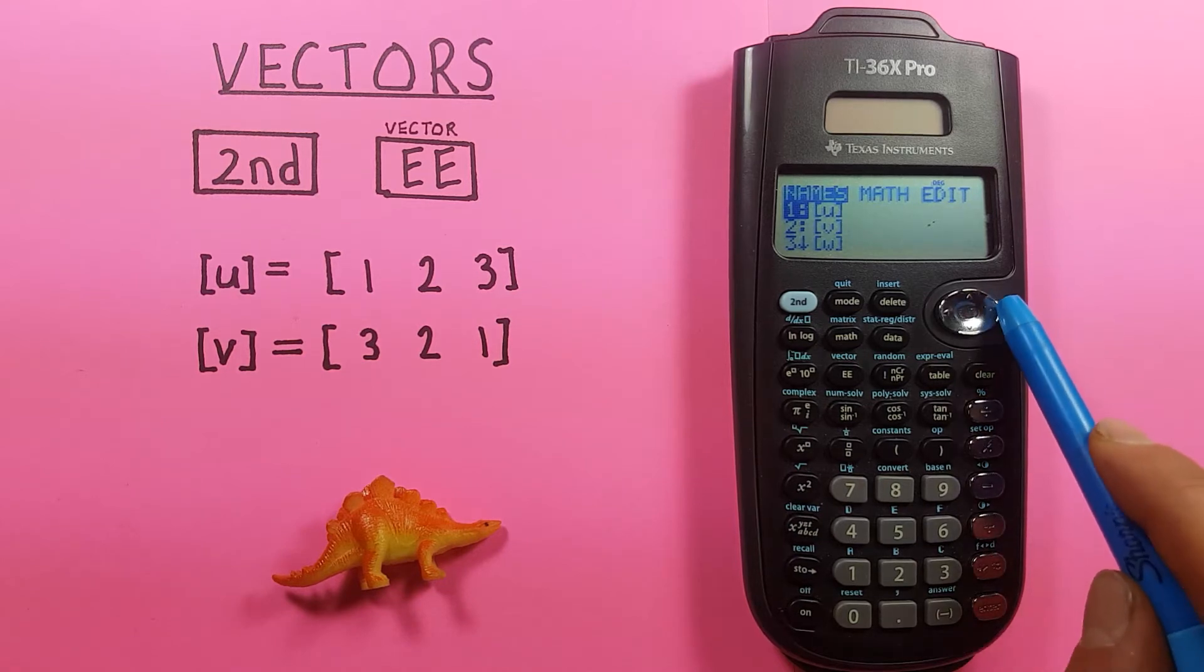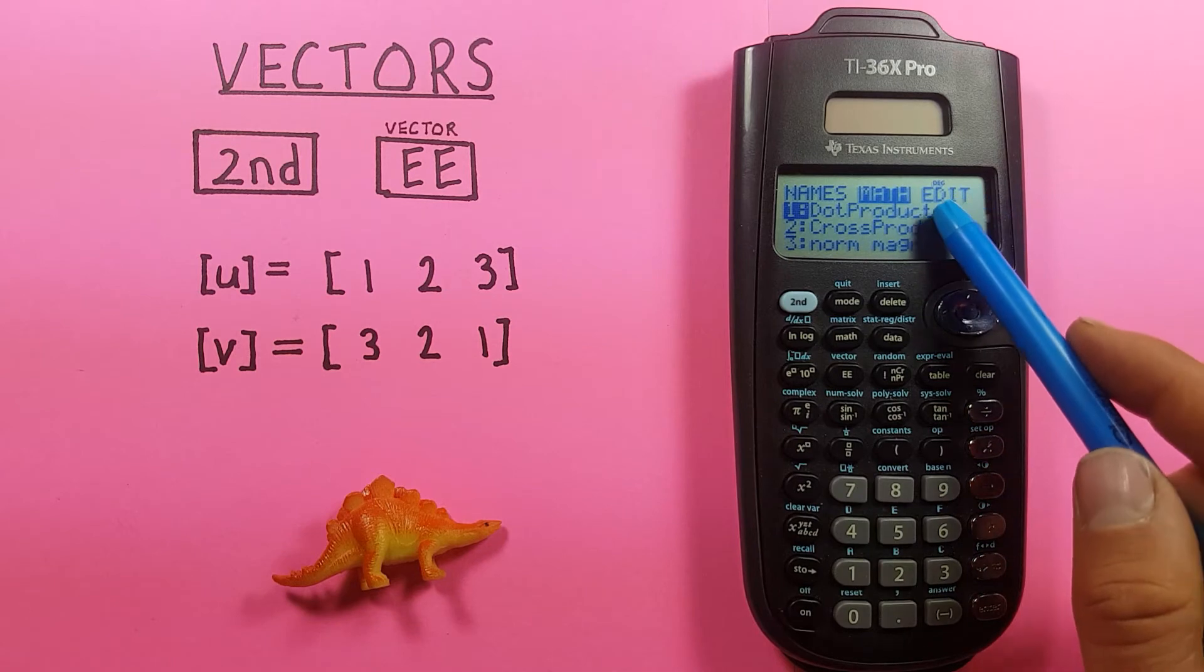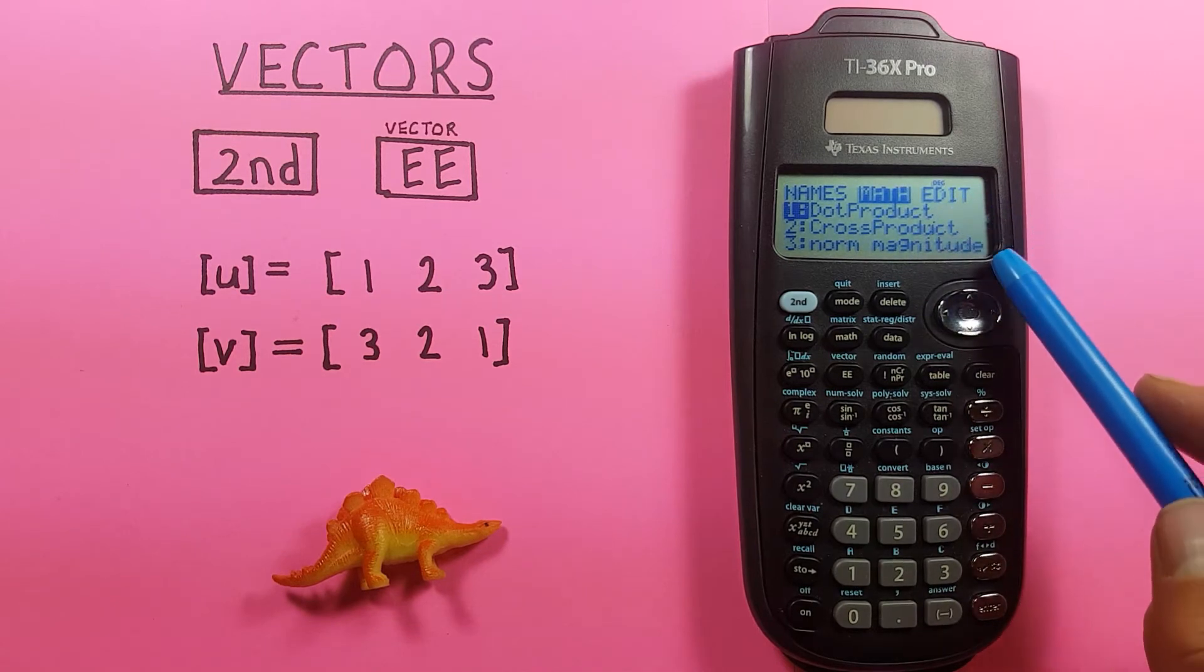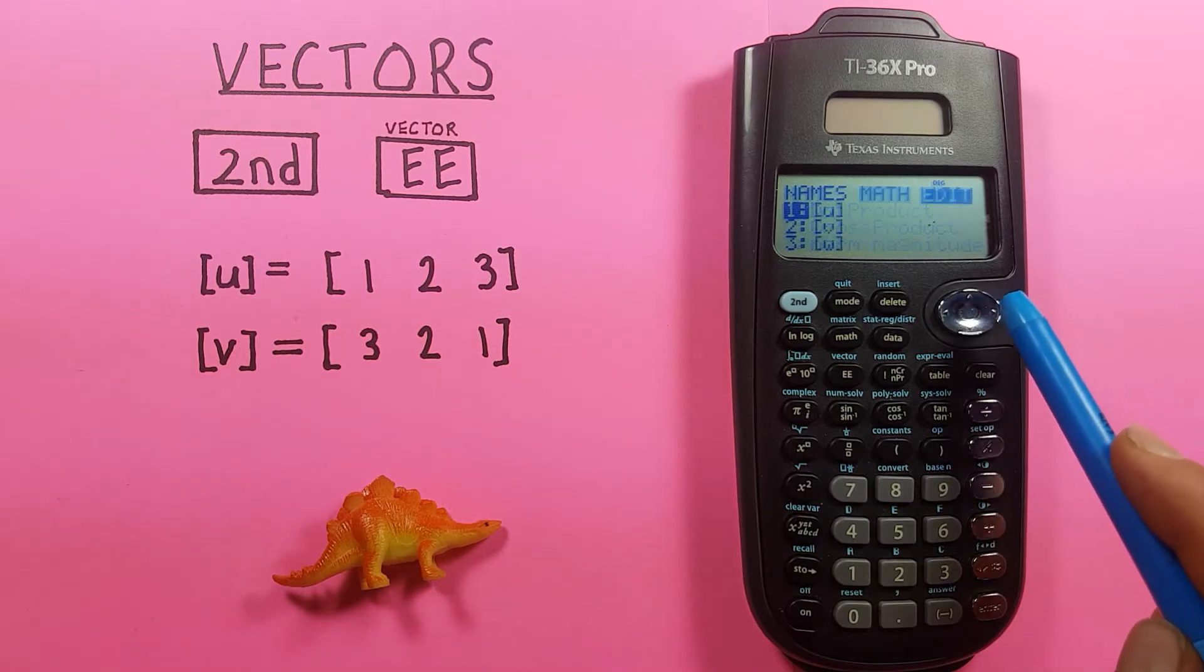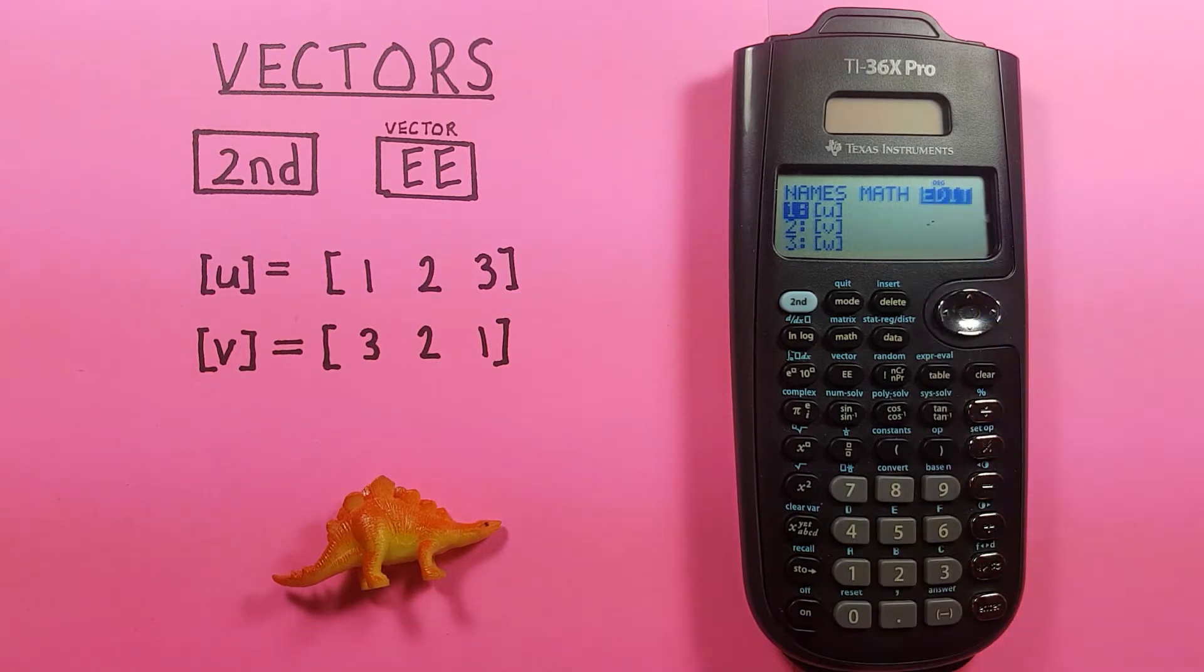If we go over to the right one to math, we see dot product, cross product, and norm magnitude. So these are different functions we can do with our vectors. And if we go right one more time we get to edit. This is where we can enter and adjust our vectors.